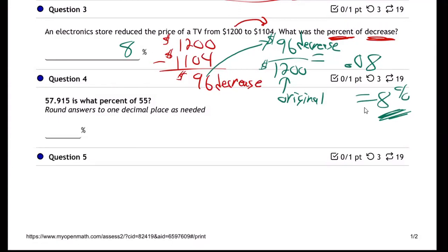So when they ask for a percent of decrease, they're saying 96 is what part of the original price. What part of the original price went down? 96 is what part of 1200? 96 divided by 1200 is 0.08, and then change to a percentage by moving the decimal two places. Eight percent. So what percent decrease? Eight percent decrease. That's an eight percent decrease on that price.